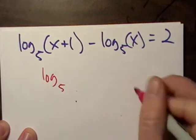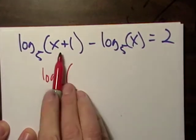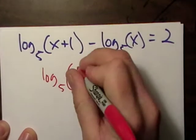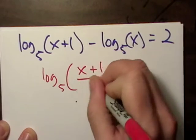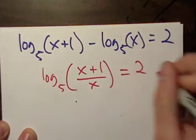That's log₅ of x plus 1 divided by x, and it's still equal to 2.